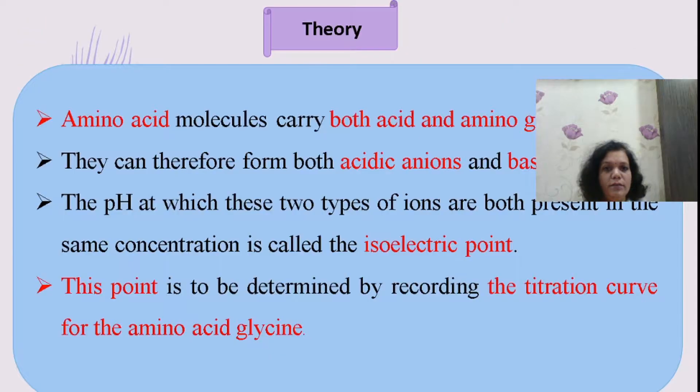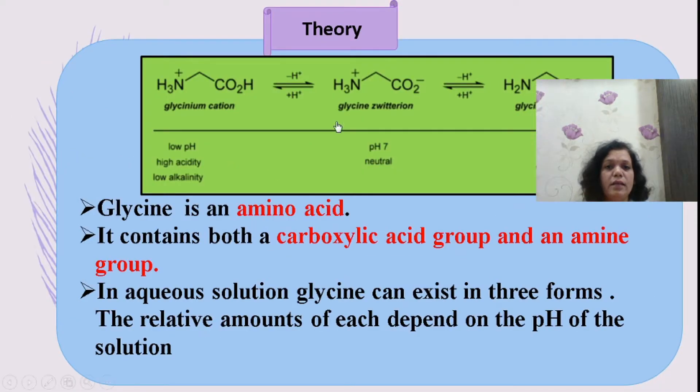When we look at an amino acid, it possesses both acidic and basic groups - a carboxylic acid group and an amino group. The carbon acts as a chiral center where four different groups are attached. Since they carry both acid and amino groups, they can form acidic ions and basic ions. The pH at which both these ions are formed is defined as the isoelectric point.